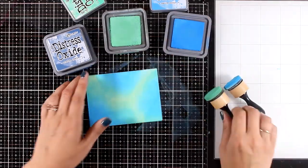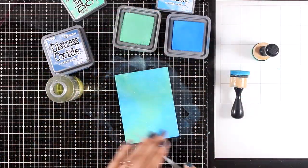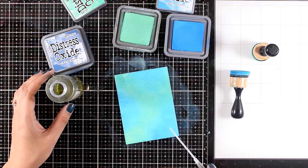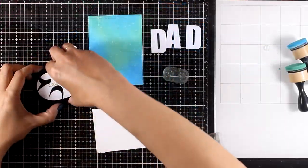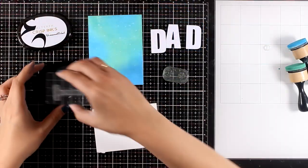I'm working on Neenah Solar White cardstock and I'm blending my colors with my blending tools. Then I'm going to add some water splashes and blot them with a cloth. I wanted to spell the word DAD in big bold letters, and that's why I used the Bold Caps Alphabet die set by Altenew.